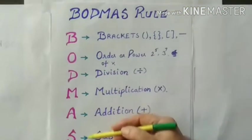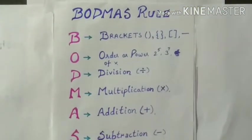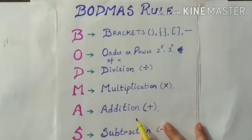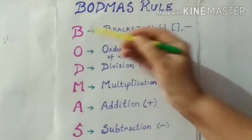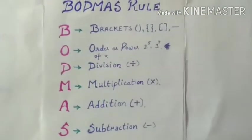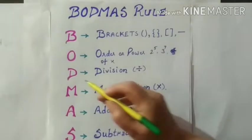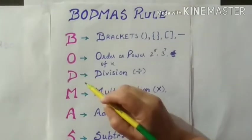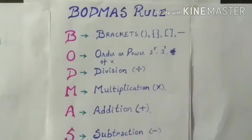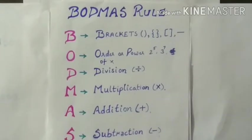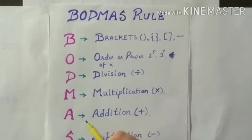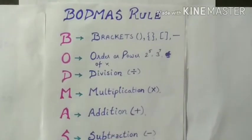So this is the sequence of the solution of numerical operation. The first thing is that if you have given all these things in a numerical operation, first you will solve the numerical numbers in brackets. Then you have to solve off numbers. And then if division, multiply, addition and subtraction are all given, which operation you have to solve first? First you have to solve division, then multiply, then addition and the last is subtraction.